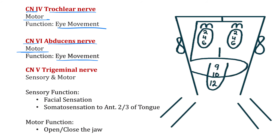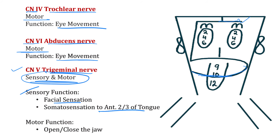Cranial nerve 5, the trigeminal nerve, is a mixed type cranial nerve — both sensory and motor. It covers the whole face and also the tongue. Sensory functions include facial sensation and somatosensation to the anterior two-thirds of the tongue. Motor functions involve the muscles of mastication — opening and closing the jaw.